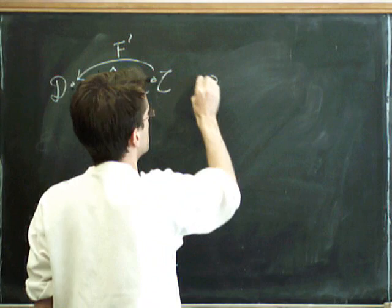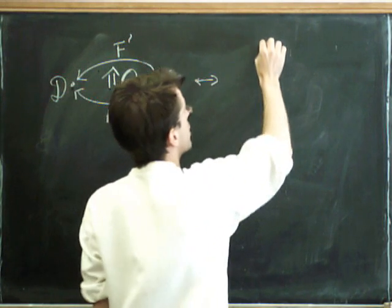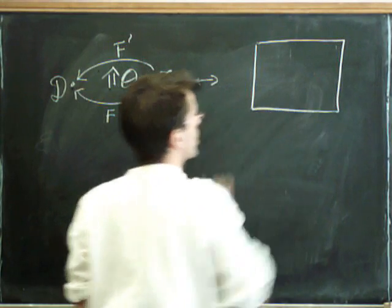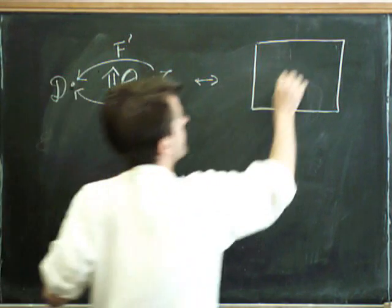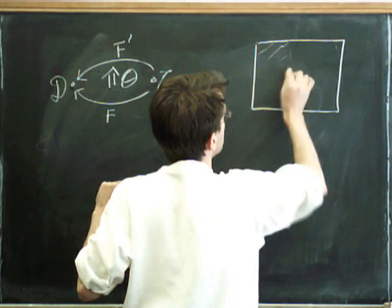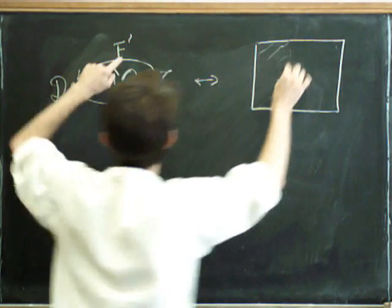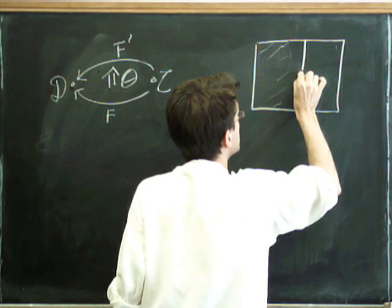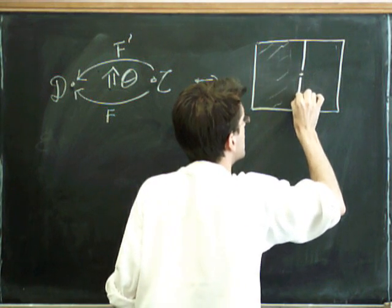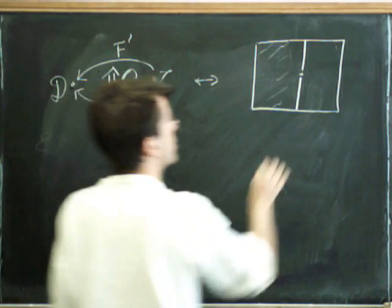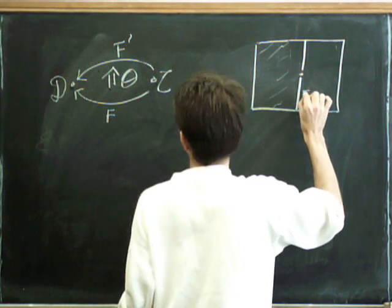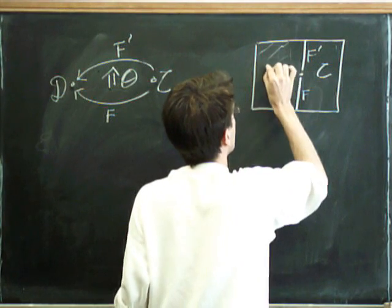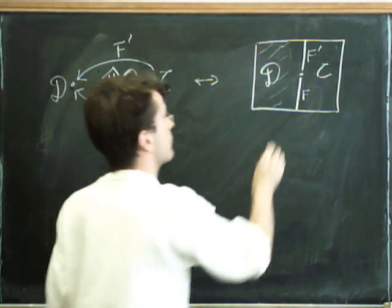So in our string diagram language, we would notate this. I'm sitting inside a plane. So the little dot there becomes the whole of the region here on this side. The F becomes a line, and then the theta becomes a point, and then the F prime becomes a line at the bottom here. So we've got F, F prime, we've got a C, and we've got a D, and we've got a theta.